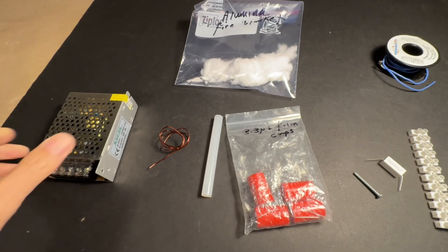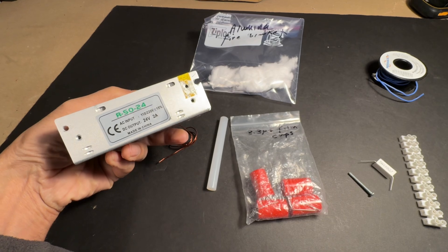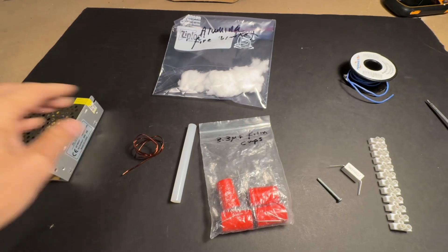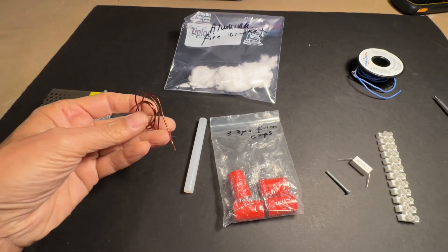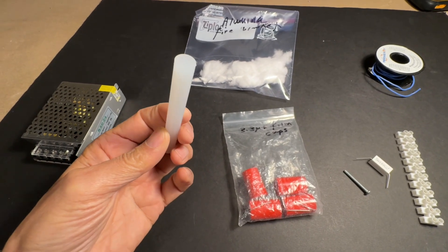So to build your project you're going to first of all need a switch mode power supply, this is 2 amps 24 volts which is one I'm using here. You're going to need some 18 gauge magnet wire and this needs to be wound around a standard glue stick